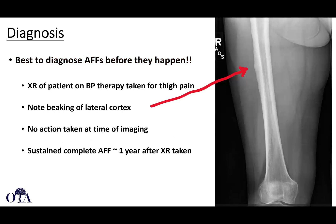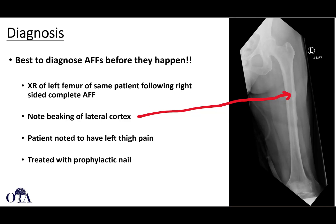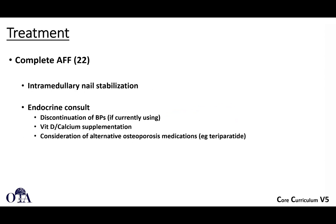Here's an x-ray of a patient on bisphosphonate therapy taken for thigh pain — or this could be the contralateral side of a patient who already had an AFF on the other side. There is that beaking. Unfortunately, this patient did develop an atypical femur fracture one year later. The other image shows beaking on the contralateral side in a patient who was treated with a prophylactic nail. We'll discuss treatment and how to address lesions found on the other side in the next video.